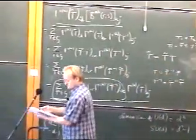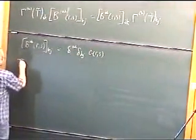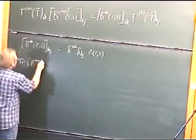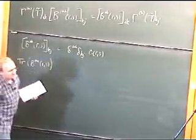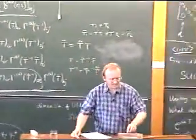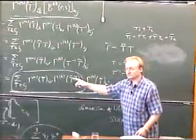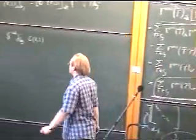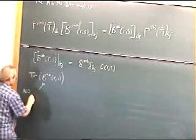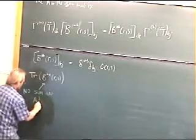What we want to calculate is the trace of B, A, A, R, S. Now I've been telling you everywhere that whenever you see a repeated index you should sum. For this one equation, do not sum over A.